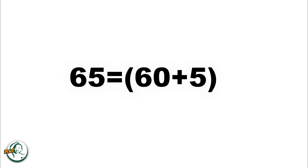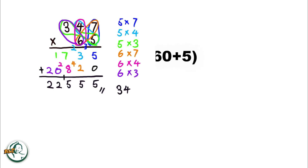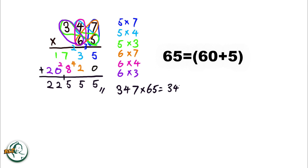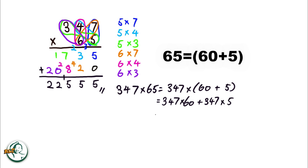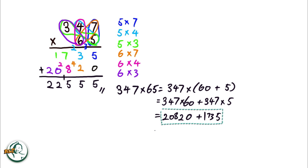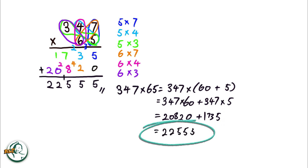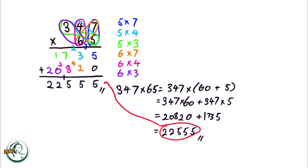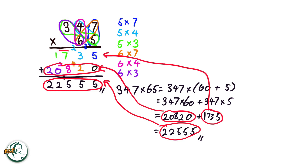Let's delve into the rationale behind this method. Consider 65 as 60 plus 5. We can express 347 times 65 as 347 times (60 plus 5). This expands into 347 times 60 plus 347 times 5, giving us 20,820 and 1,735 respectively. Adding these, 20,820 plus 1,735 equals 22,555. This explains why we need to add these two numbers in the column method.